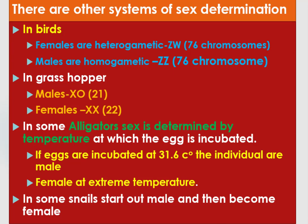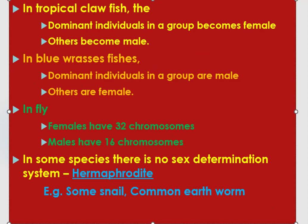In some alligators, the sex of the individual is determined by the temperature at which the egg is incubated. If eggs are incubated at 31.6 degrees Celsius, the individuals are male; if incubated at extremely high or extremely low temperatures, the individuals become female. In some snails, they start out male and then become female. In tropical clownfish, the dominant individual in a group becomes female and the others become male. In blue wrasse fish, the dominant individual becomes male and the others become female.